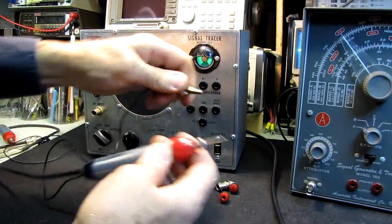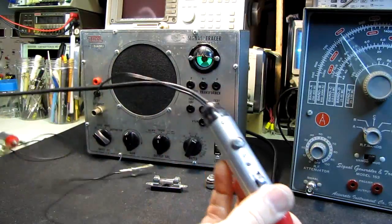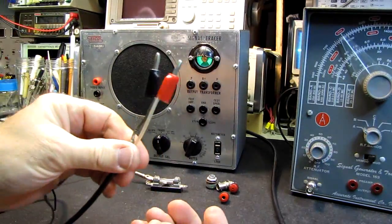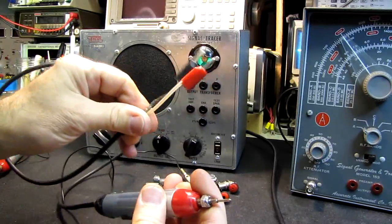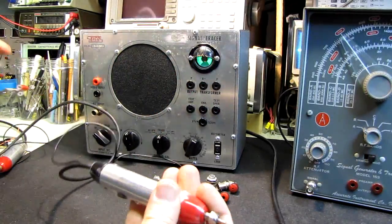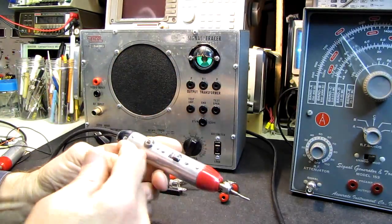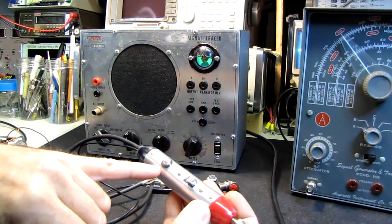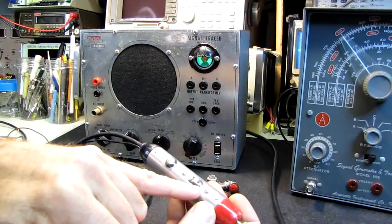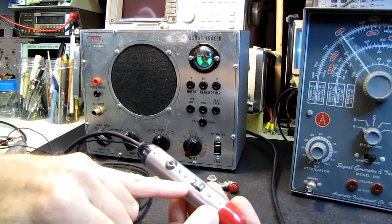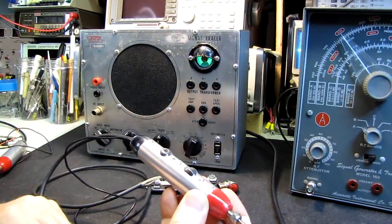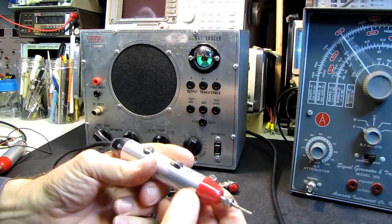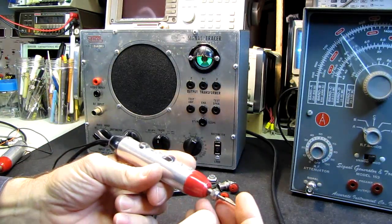Here is another Heathkit probe. I am using this one for the audio input because it just happened to already have banana jacks on the other end that fit the audio input. Internally this is like any other scope probe - there is resistors, a compensation capacitor. It has a times one and a times ten setting. I have simply left it in the times one setting so now that it is a pass through for audio.